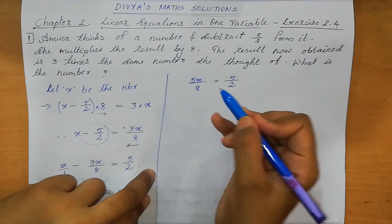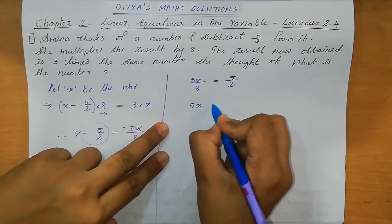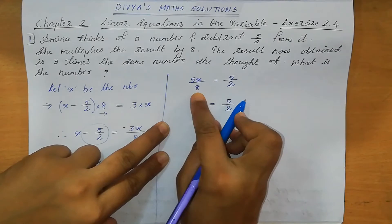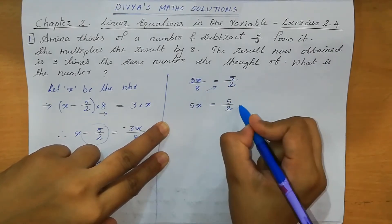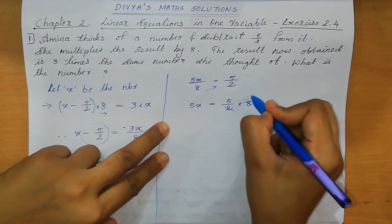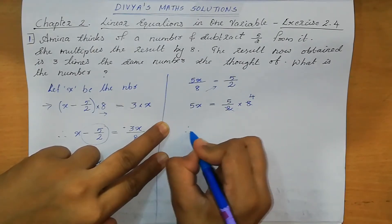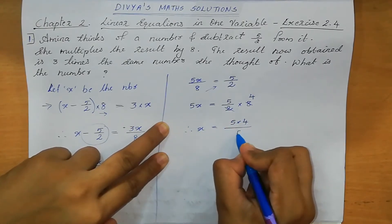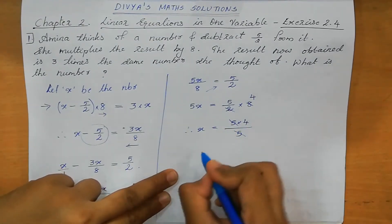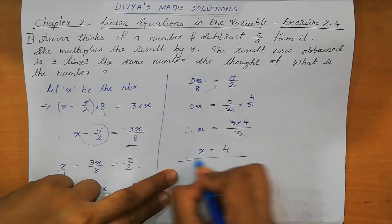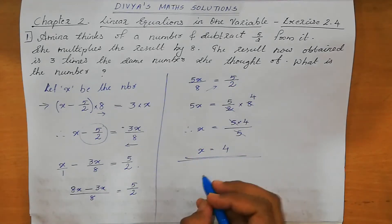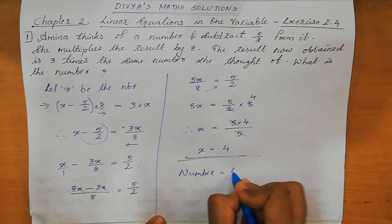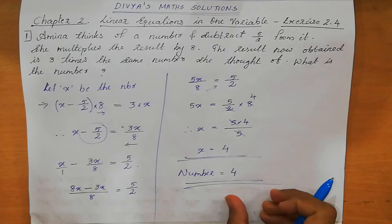We are going to find the value of X. From here we can write 5X equal to 5 by 2 into 8 — division becomes multiplication, so into 8. 4 twos are 8. So X equal to 5 into 4 divided by 5. 5 and 5 cancel. We get X equal to 4. Therefore the number equal to 4. This is the final answer — the number she thought of is 4.